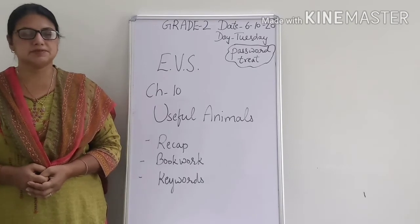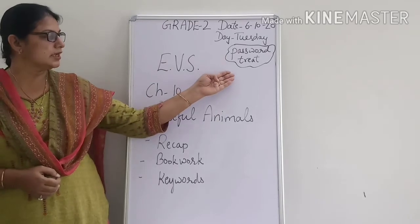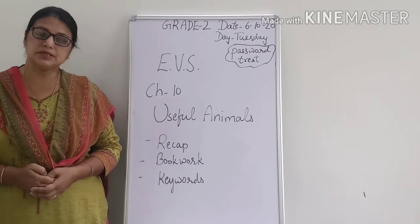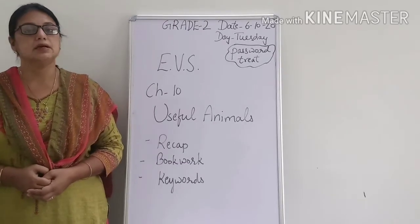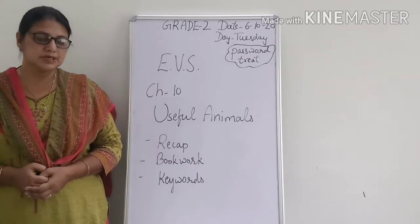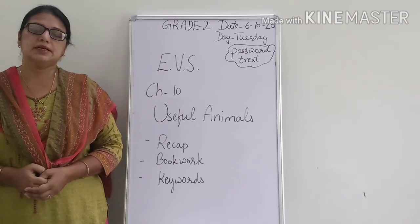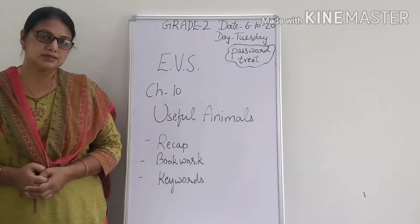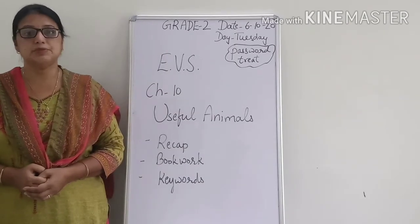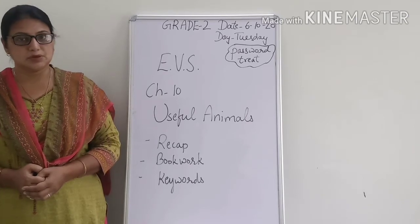So children, we will be starting today's EBS class with a discussion of the password. Our password for today is TREAT. Here we are mentioning this word as a noun. The meaning of this word is something that makes somebody happy. We can use this word in a sentence like: my parents gave me a treat when I scored first position.